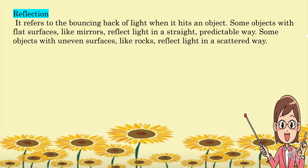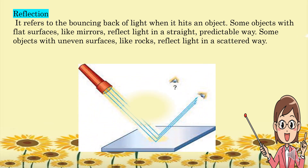Another is reflection. Reflection refers to the bouncing back of light when it hits an object. Some objects with flat surfaces like mirrors reflect light in a straight, predictable way. Some objects with uneven surfaces like rocks reflect light in a scattered way.